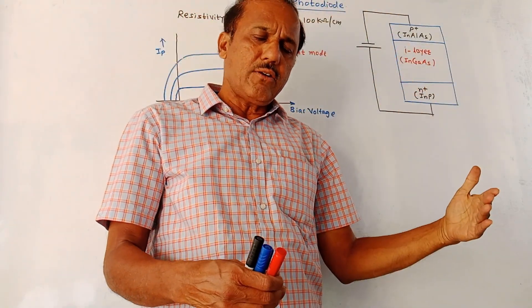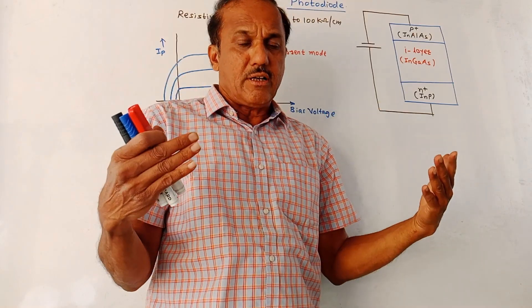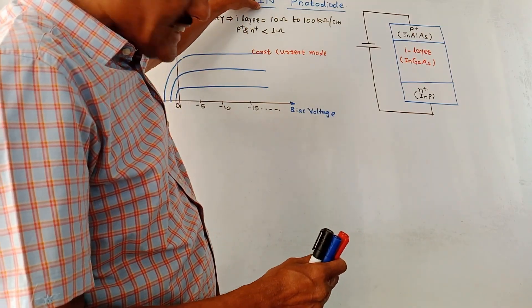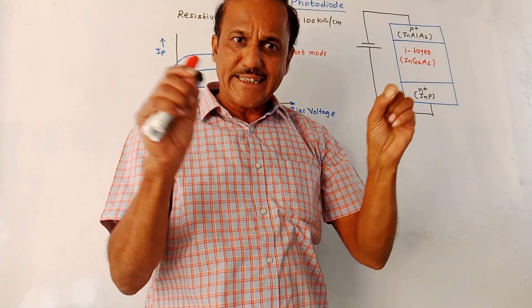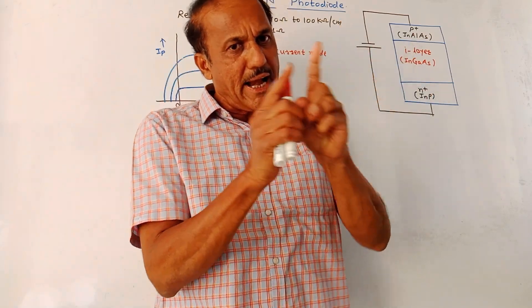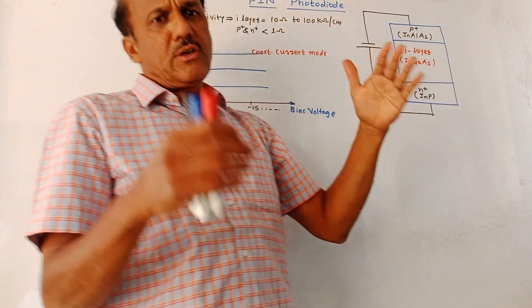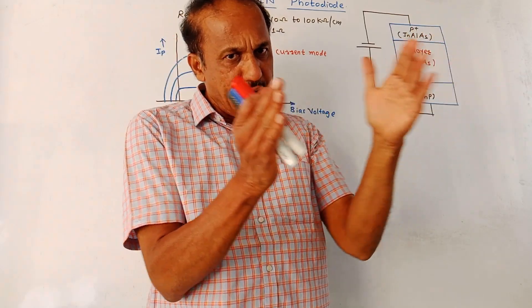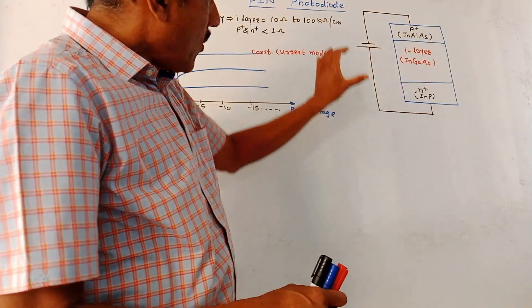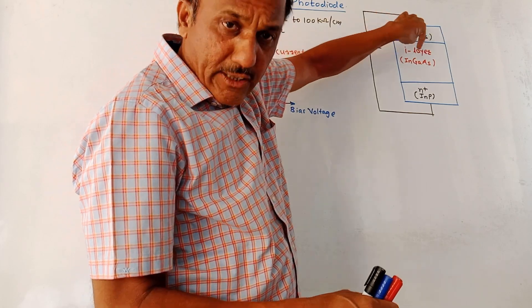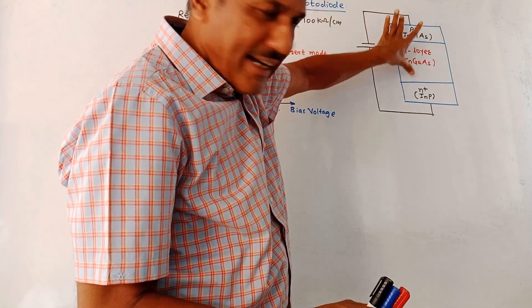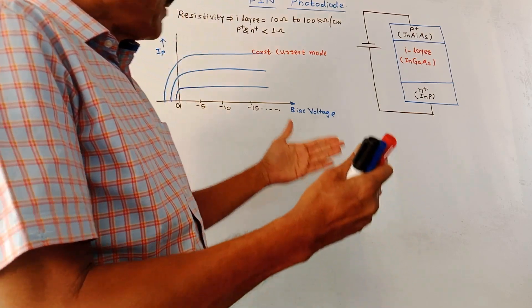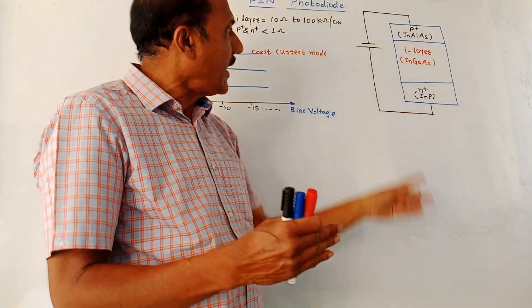The pin photodiode is very similar to the conventional PN junction photodiode, apart from slight changes. As the name indicates, the 'I' stands for undoped intrinsic layer, placed between the P and N regions. We have already discussed the PN junction photodiode, which has a depletion region between P and N. Here, we insert an intrinsic undoped I layer between P and N regions, so the width of the depletion region gets increased. This is the major difference between the conventional photodiode and the pin photodiode.